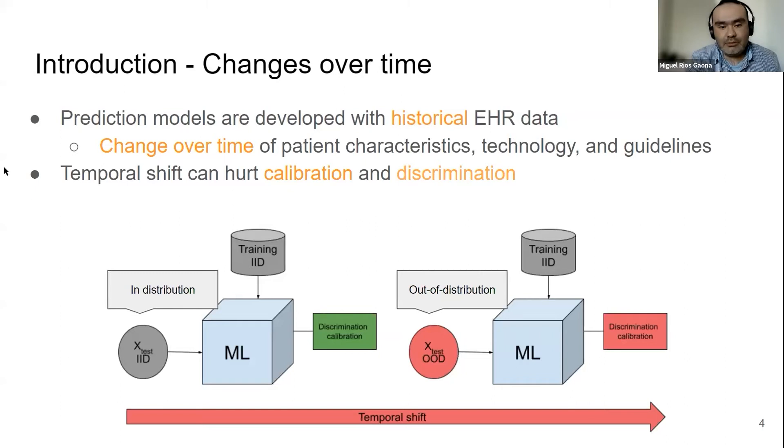For example, we can see here that models are usually trained and evaluated in distribution. As time passes, prospective patients can end up being out of distribution.